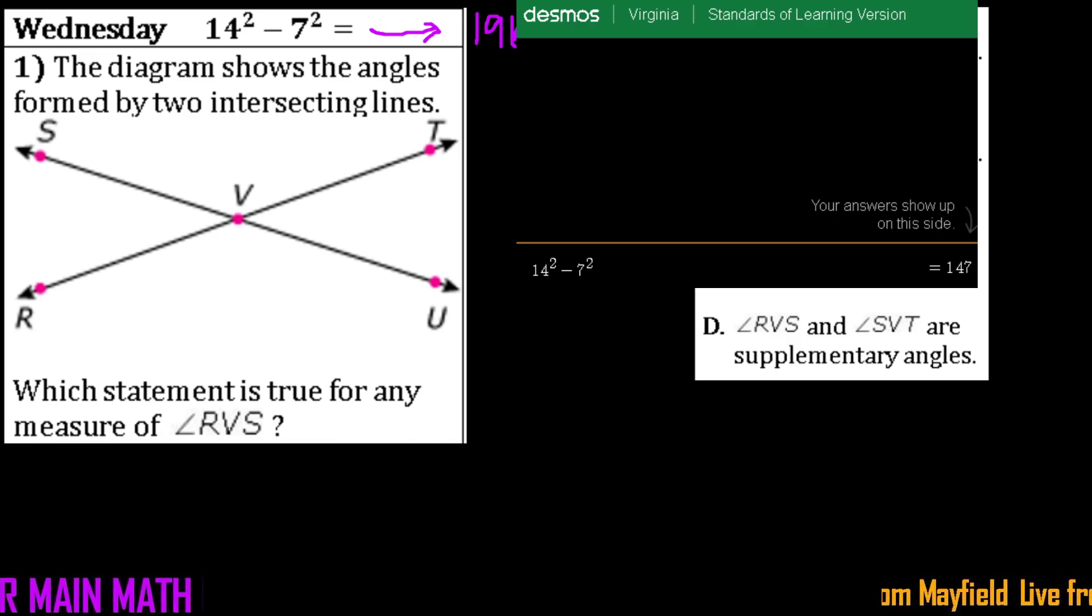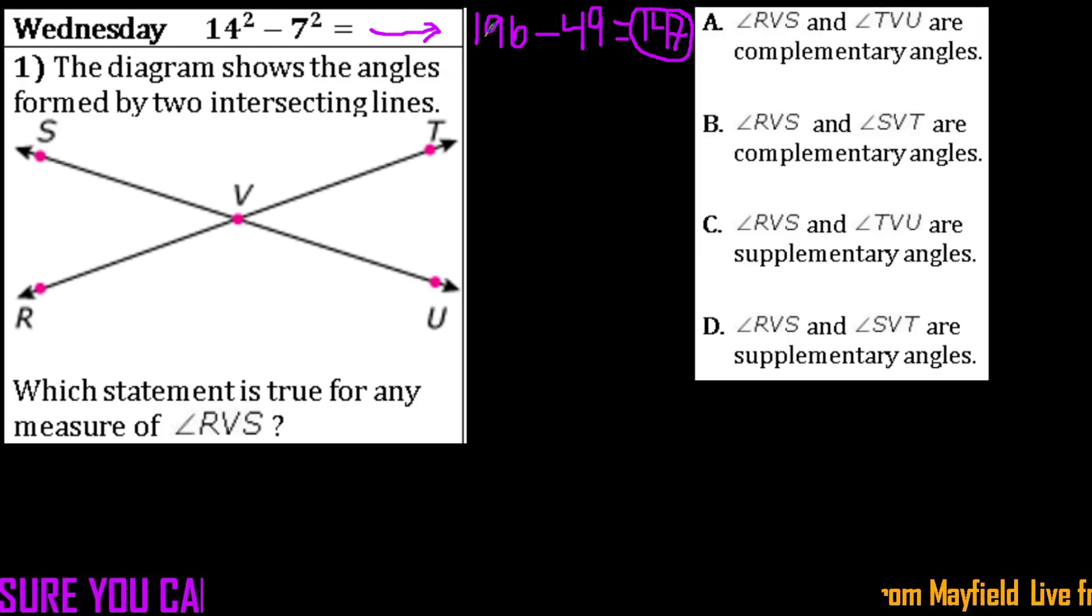Again, get used to having those perfect squares for yourself. So make sure you're saying, all right, we have 196 minus 49 is 147.